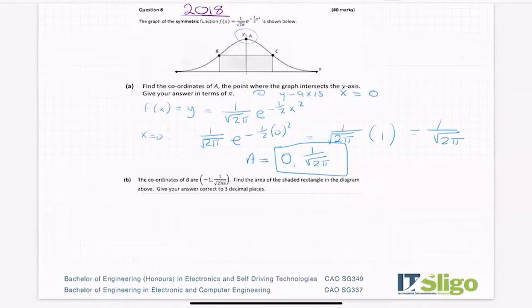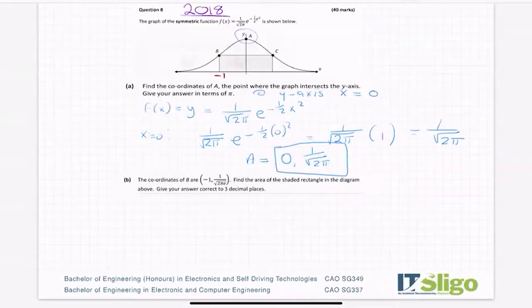Part b. The coordinates of B, which is here, is minus 1. So minus 1, 1 over root 2πe. Find the area of the shaded rectangle in the diagram above.